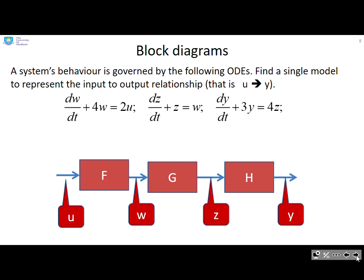This helps if you have a number of systems which are interconnected. You can see here I have interconnected systems f, g and h. If we look at this top one here, I could work out that the transfer function model is going to be f equals 2 over s plus 4, and that gives me the relationship between the signal u and the signal w.